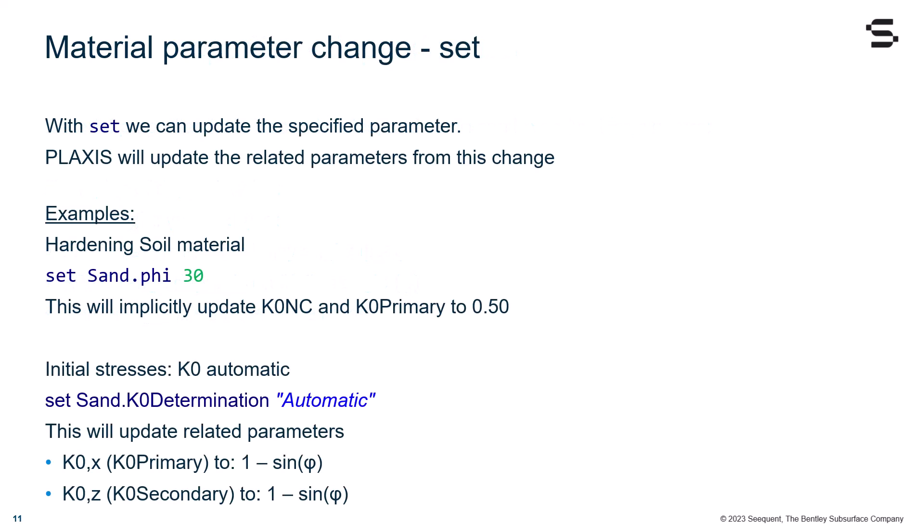With the set command, we can update the specified parameter, and PLAXIS will update the related parameters from this change. For example, in a hardening soil material, we can say set Sand.phi to 30, and this will implicitly update K0nc and K0Primary to 0.5.